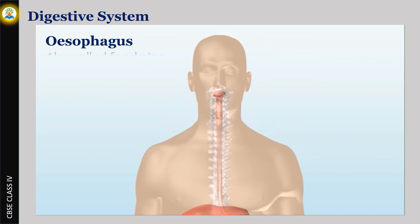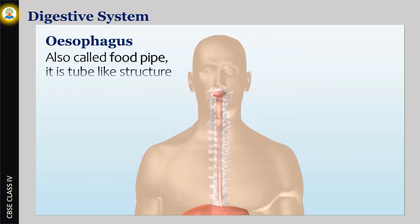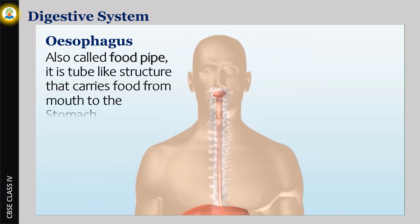Esophagus, also called the food pipe: It is a tube-like structure that carries food from the mouth to the stomach.